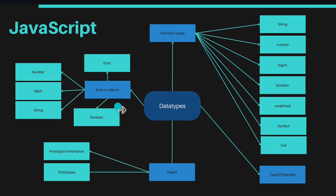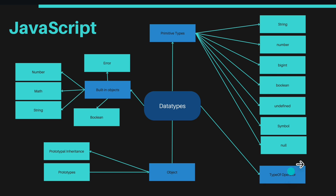For data types, don't be overwhelmed by the number of topics. In primitive data types there are close to seven types: string, number, BigInt, boolean, undefined, symbol, and null. The ones you'll use heavily are string, number, and BigInt — BigInt is especially useful when fetching token prices from a contract or blockchain. Boolean and undefined are also very important; sometimes an API call returns undefined because data takes time to load, so you have to know how to handle that.